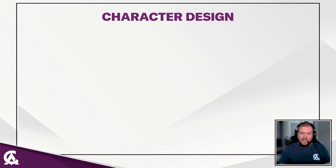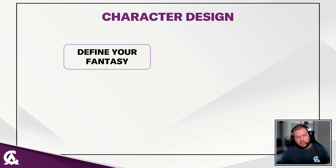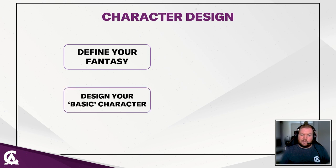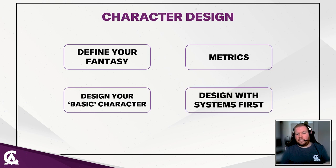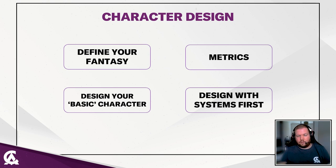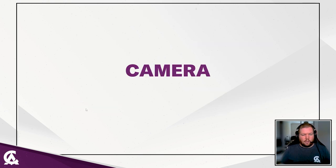To recap character design and the four points: number one, define your fantasy; number two, design your basic character first; number three, use metrics to describe your character; and number four, design with systems first. If you follow these four steps, along with basics like affordance and convention, this should give you a solid understanding of how to make your character design feel intuitive in your game world.